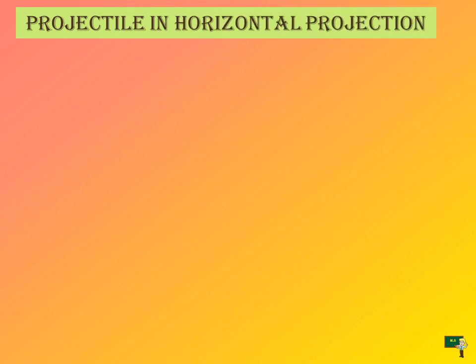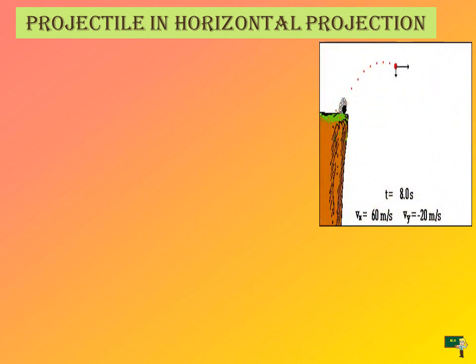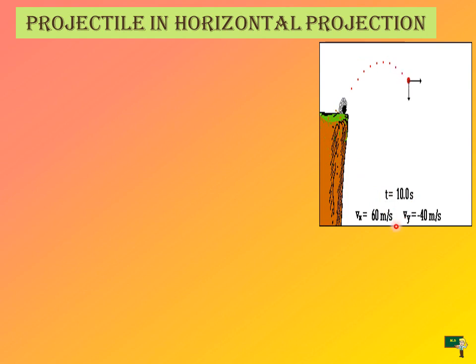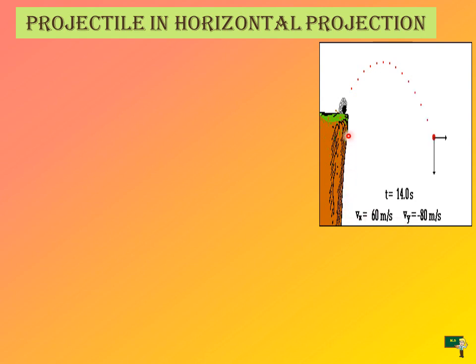Now we are going to see the projectile in horizontal projection. Students, can you see this picture? It shows a horizontal projection where we are throwing a ball from a certain height. You can see the height variation, timing, and the velocities in the x and y directions — velocity vx along the x-axis and velocity vy along the y-axis.